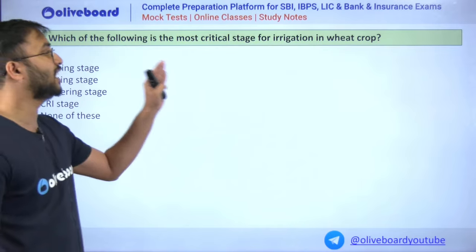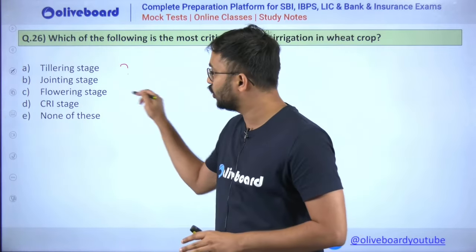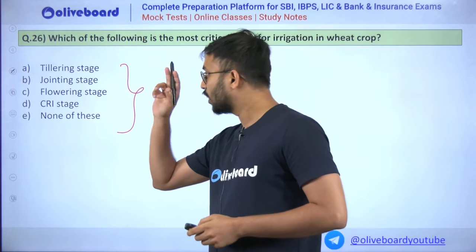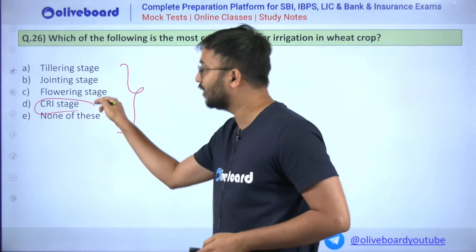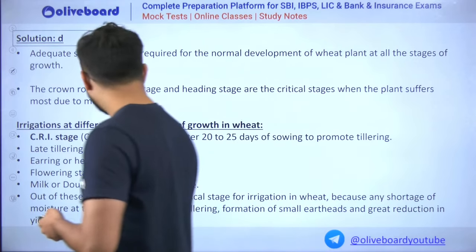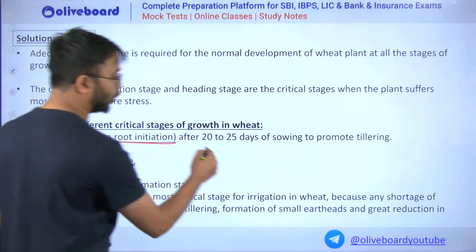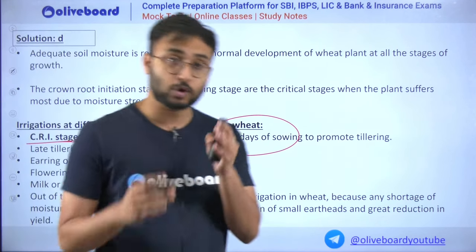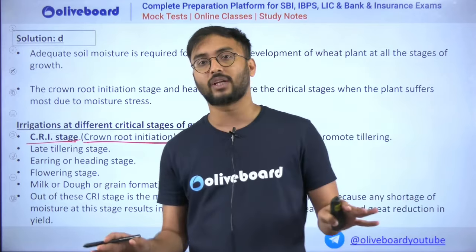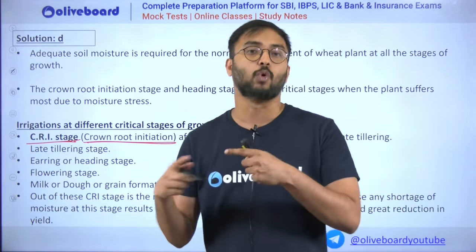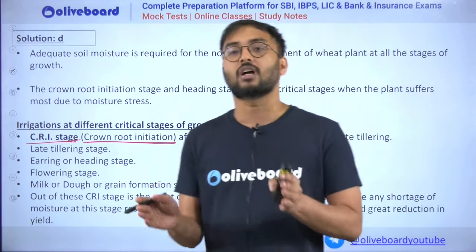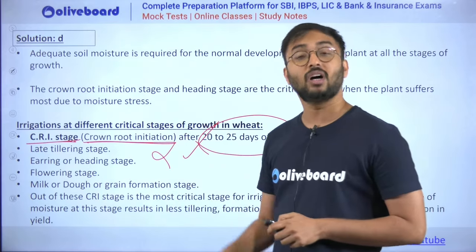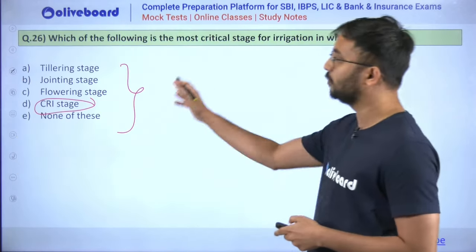Question 26: Which is the most critical stage for irrigation of wheat crop? Options include tillering stage, jointing stage, flowering stage, CRI stage, and none of these. The answer is the CRI stage — Crown Root Initiation. It occurs after 20–25 days of sowing to promote tillering. This stage is very important for wheat because wheat is sensitive to climate. Crown root initiation is the most critical irrigation stage for wheat.